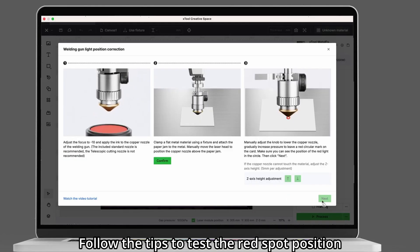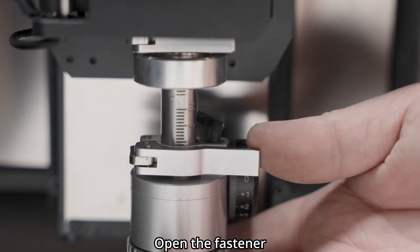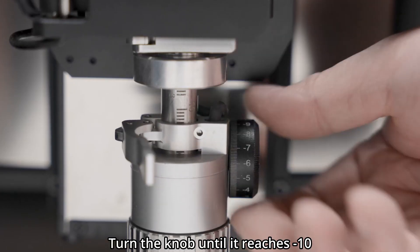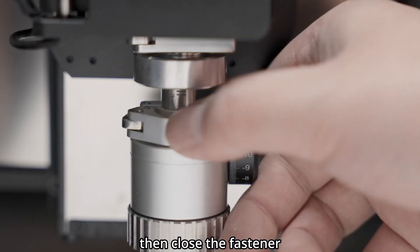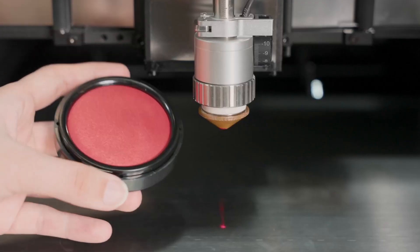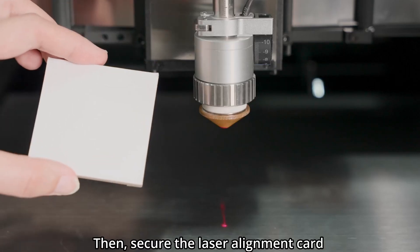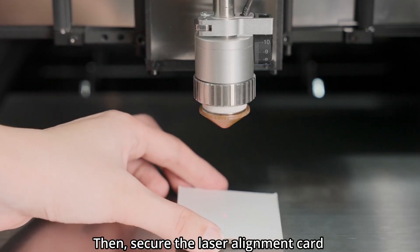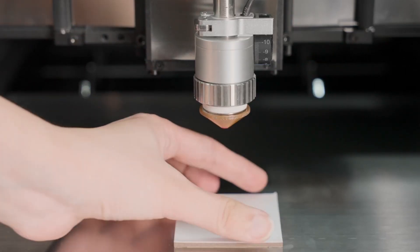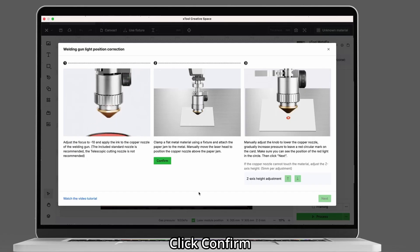Click Not Centered. Follow the tips to test the red spot position. Open the fastener, turn the knob until it reaches negative 10, then close the fastener. Press the red stamp pad against the cutting tip to leave colors on the tip. Then, secure the laser alignment card right under the cutting tip. Click Confirm.